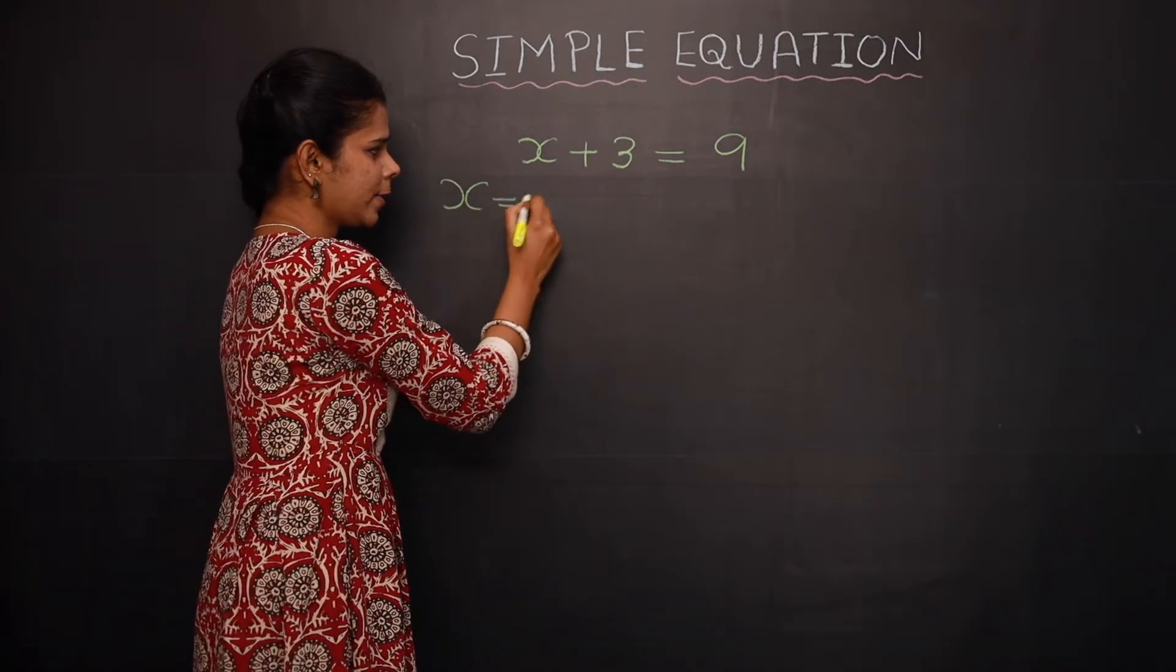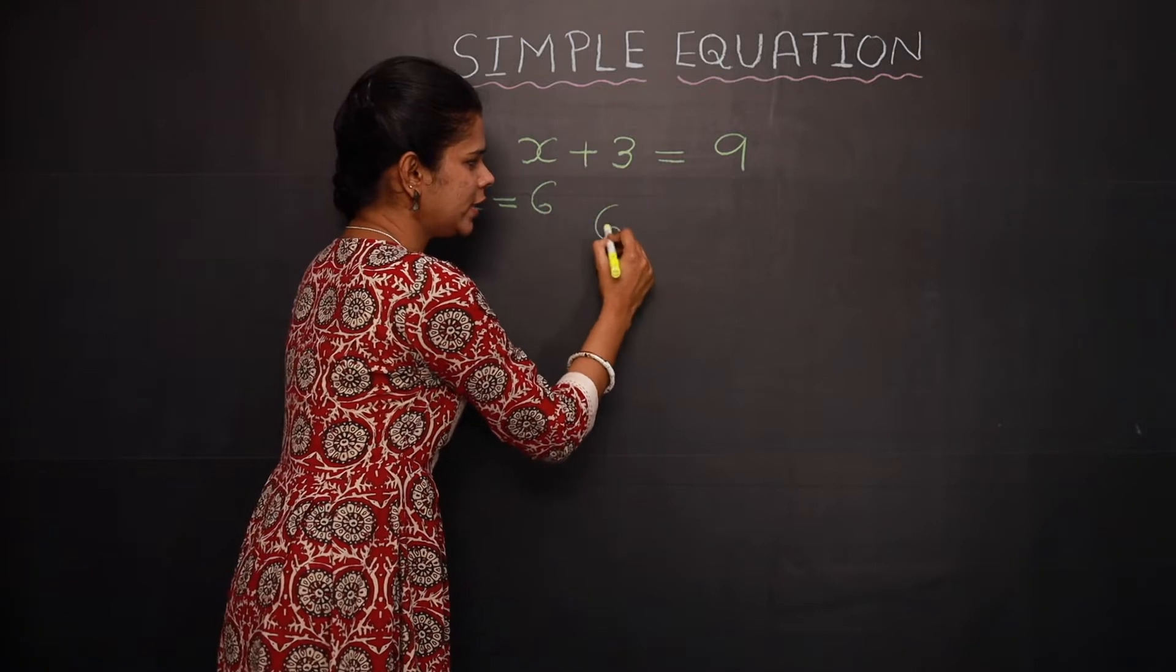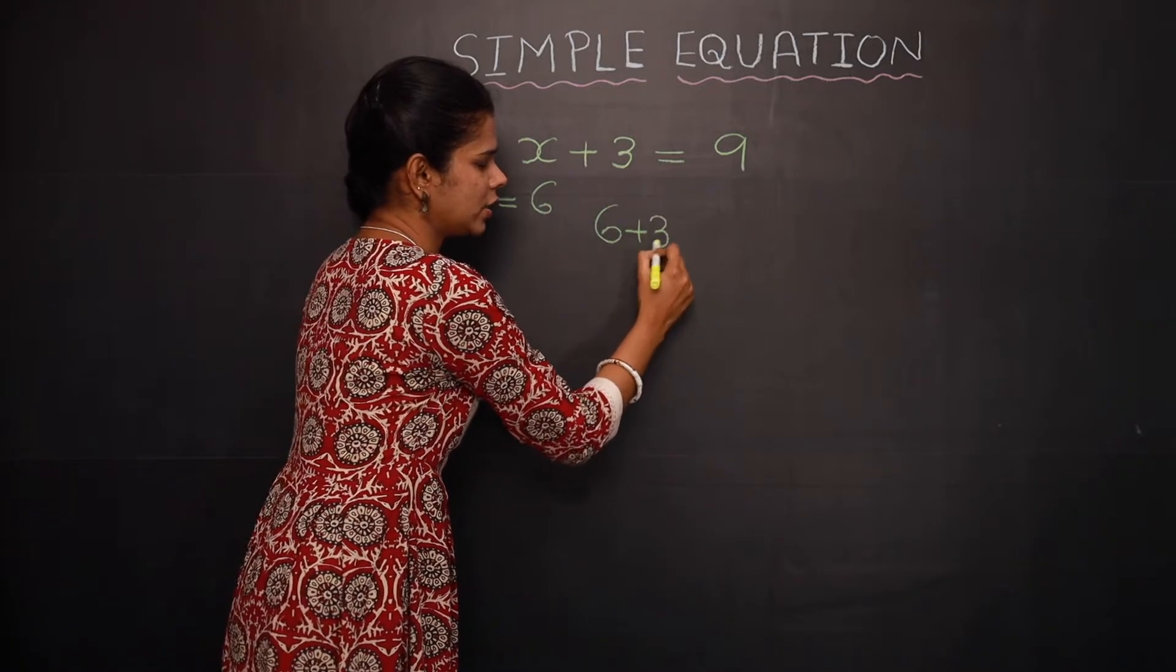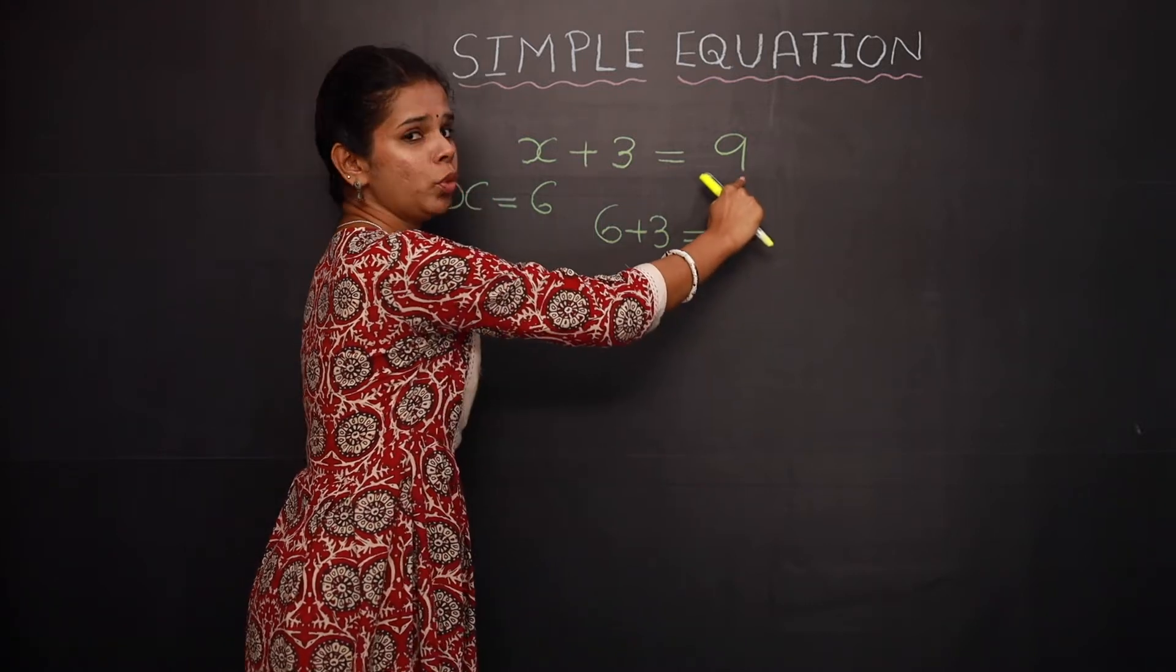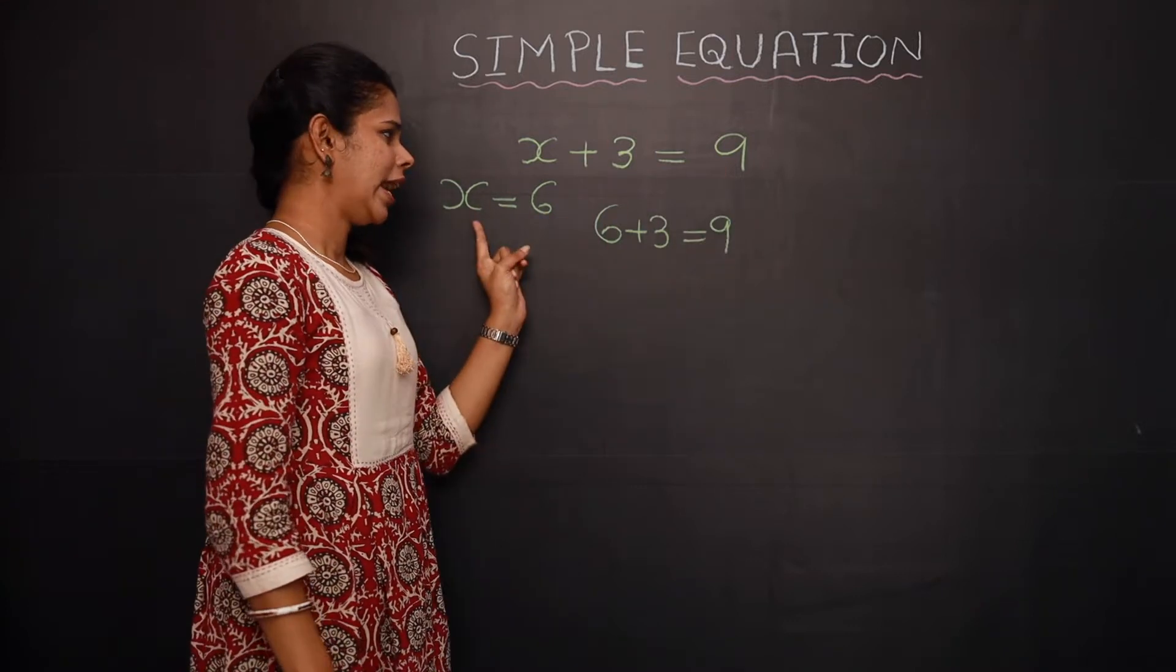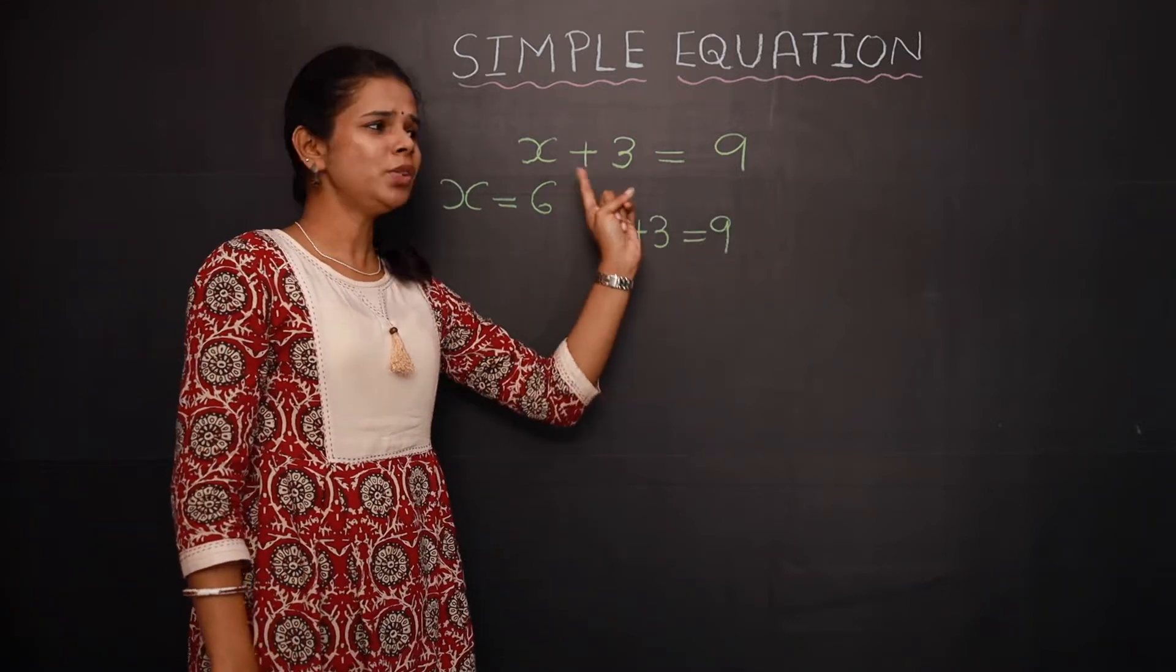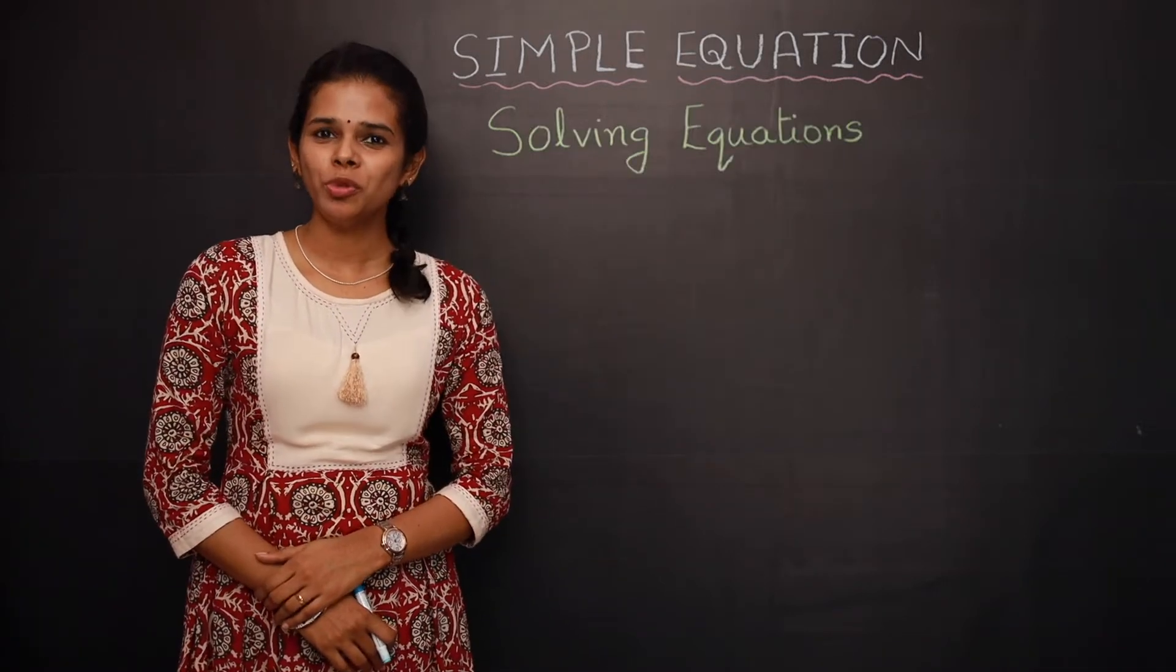What if x is equal to 6? You will take the left-hand side. You can see 6 plus 3 gives you 9, and this 9 and this 9 is the value given in the RHS, that is the right-hand side. So you can say that x equal to 6 is the solution of this given equation.